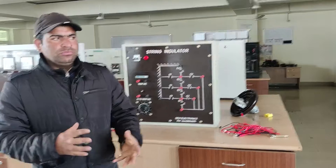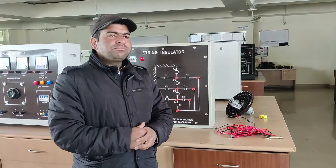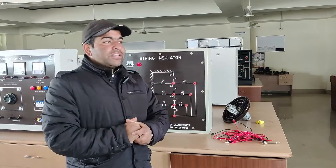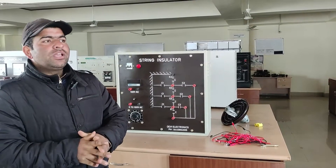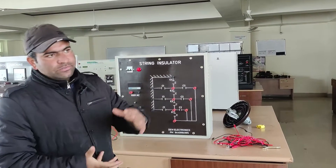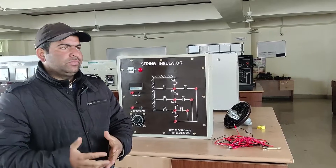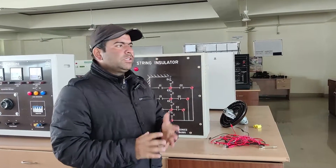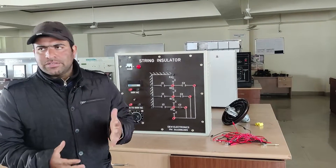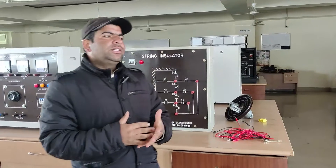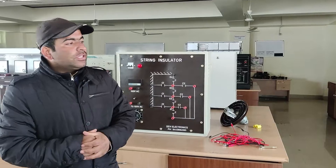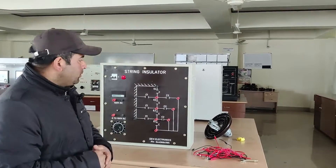The number of insulator discs required in a given transmission depends upon the operating voltage. What actually happens when we transmit a particular voltage in a transmission system is that when we fix the number of insulators required, we come to a conclusion that the level of insulation is not being properly utilized — the discs are not getting uniformly utilized.